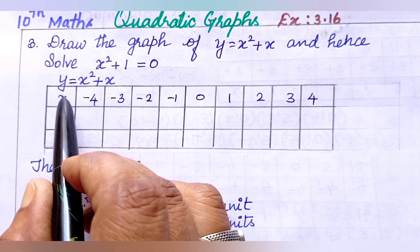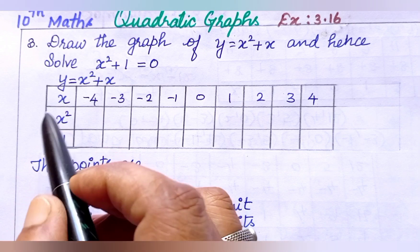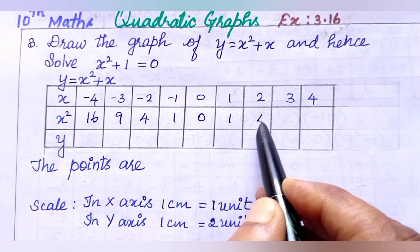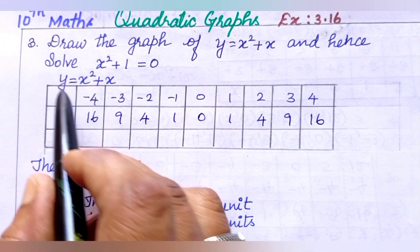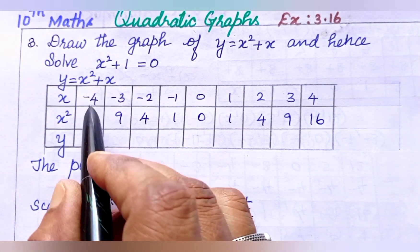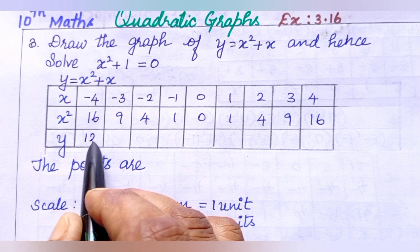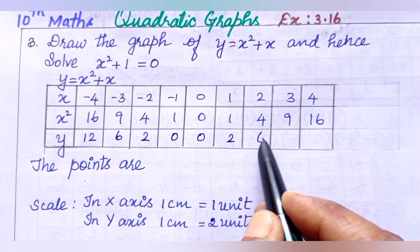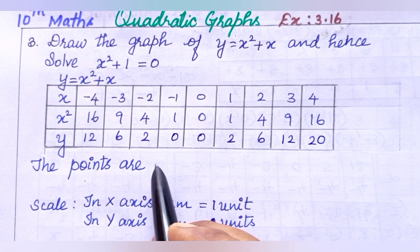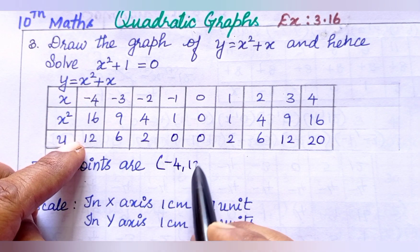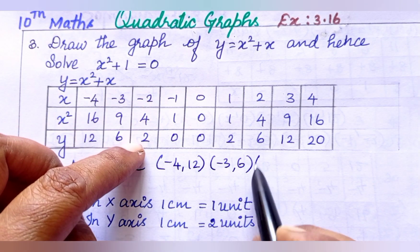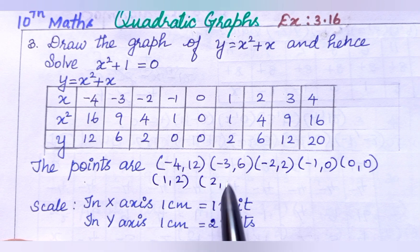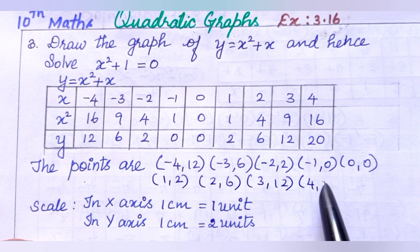For x squared: 1, 0, 1, 4, 9, 16. For x values: 2, 0, and then 0, 2, 6, 12, 20. The coordinate points are: (minus 4, 12), (minus 3, 6), (minus 2, 2), (minus 1, 0), (0, 0), (1, 2), (2, 6), (3, 12), (4, 20).